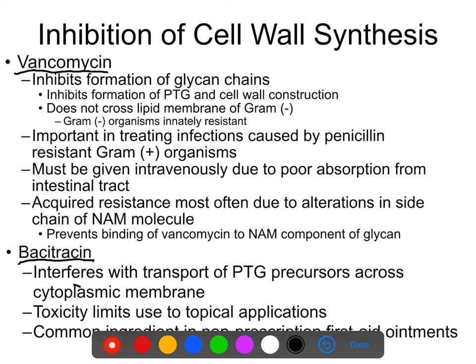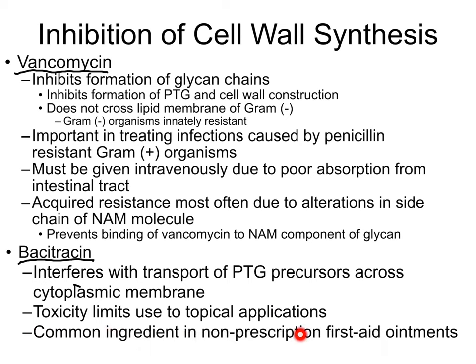There are things that are resistant to vancomycin, so it's not 100% effective, but it's a good second-line drug. Bacitracin is fairly toxic, and I'm less insistent that you know that one — it's usually only used in topical applications and is common in first aid ointments.